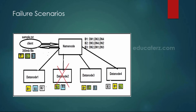If the name node itself goes down, since the name node is the master for the entire Hadoop cluster, the entire cluster will be down and nobody can access it — because the main metadata information is stored in the name node. That is why in Hadoop 2.x we have advanced concepts like HDFS high availability. In further modules, we will discuss in detail how high availability works so that if one name node goes down, another name node takes care of the entire cluster.